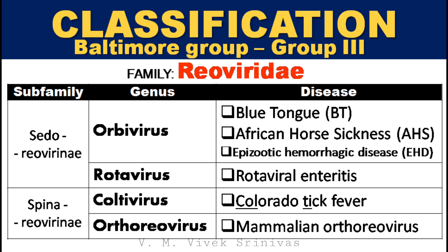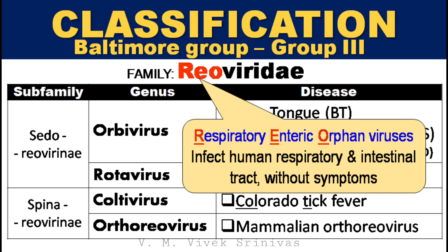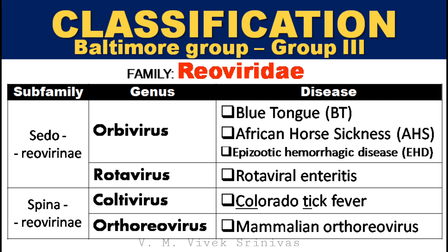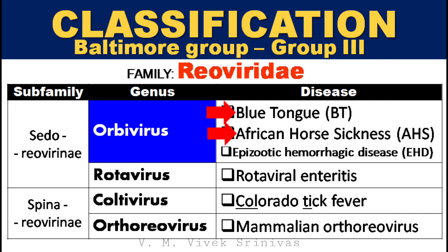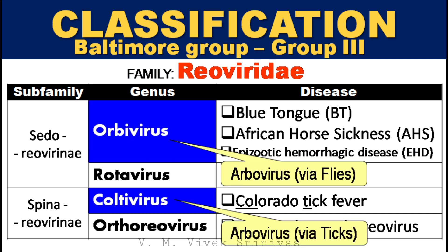Classification. The Reoviridae family is classified under Baltimore Group 3, which comprises viruses with double-stranded RNA genome. The word 'REO' refers to respiratory enteric orphan viruses — these viruses infect the human respiratory and intestinal tracts without symptoms. Veterinary important viral diseases under this family include bluetongue and African Horse Sickness, under the genus Orbivirus.